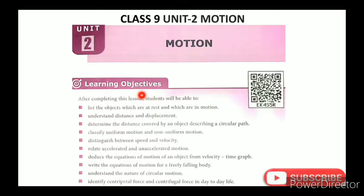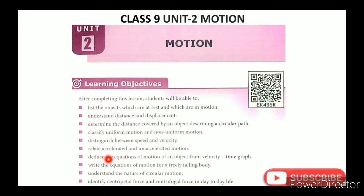Motion. In this lesson, the learning objectives are: list the objects which are at rest and which are in motion; understand distance and displacement; determine the distance covered by an object describing a circular path; classify uniform motion and non-uniform motion; distinguish between speed and velocity; relate accelerated and unaccelerated motion; deduce the equations of motion of an object from a velocity-time graph; write the equations of motion for a freely falling body; understand the nature of circular motion; identify centripetal force and centrifugal force in day-to-day life.